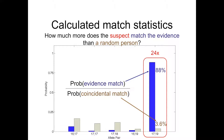To calculate a match statistic once we have separated genotypes is straightforward — it is just like random match probability. The question is: how much more does the suspect match the evidence than a random person? The blue bars show the probability distribution of the separated genotype from the evidence. The brown bars from a random person developed from a population database give the chance of a coincidental match. Before seeing the data, the 17-19 genotype is indicated in brown at about 3.6%. After seeing the data, indicated in blue, the evidence genotype is up at 88%. That ratio of blue to brown — evidence to coincidence — is around 24, which is the match statistic at this locus.